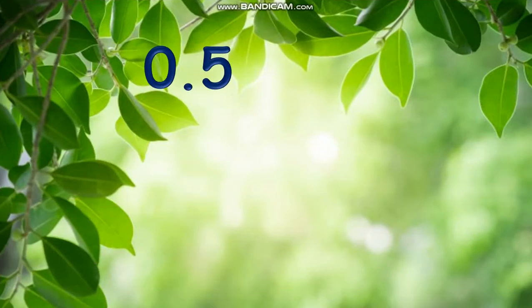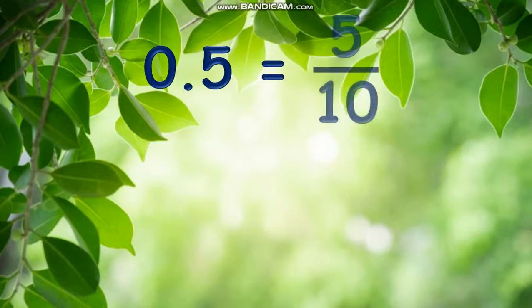The number point 5 or 0.5 is a decimal and is just another way of writing the fraction 5 tenths. As a rule, a decimal is just another way of writing fractions whose denominators are powers of 10, and the proper way to read them is the same as reading the equivalent fractions they represent.